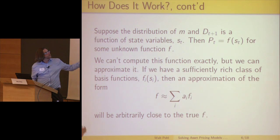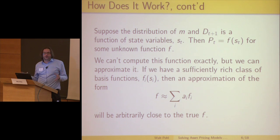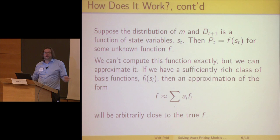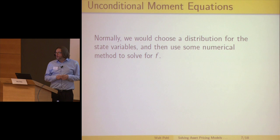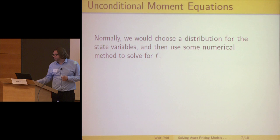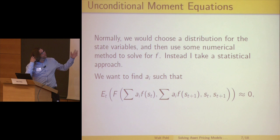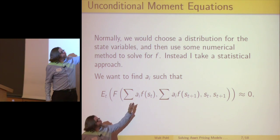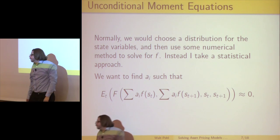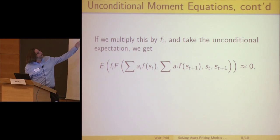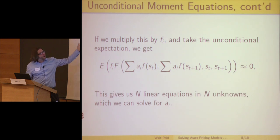So I just approximate it. I let f be some linear combination of basis functions f_i that I choose. If I choose a rich enough family of f_i's then I can approximate an arbitrary f — the only restriction is that to get a good approximation I need enough data. What people normally do at this point is write down some conditional distribution for the state variables and solve using some numerical method. Instead, I just want to find an f that satisfies the conditional moment equations, so I multiply through by the basis functions f_i and take the expectation. This gives me n equations and n unknowns, and it turns out to be linear because the stochastic discount factors are linear in prices.